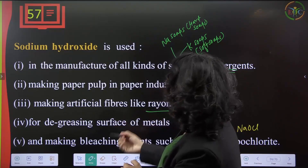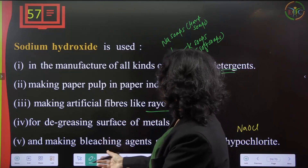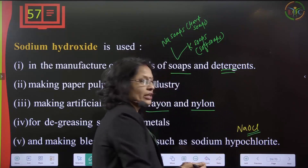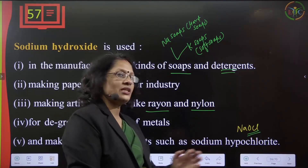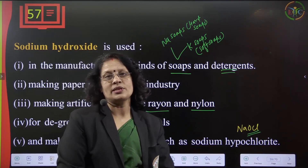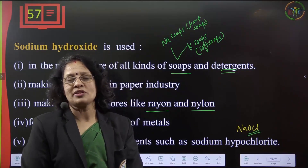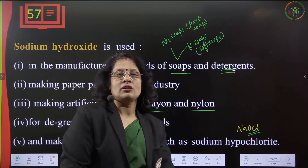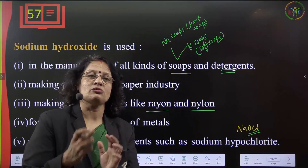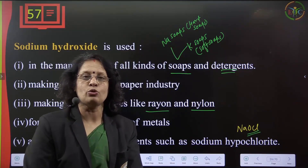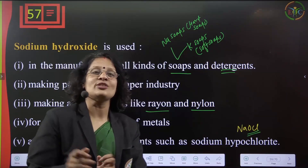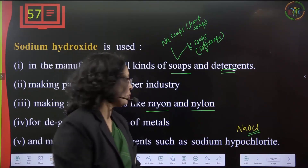Sodium hydroxide is used for degreasing metal surfaces and for making bleaching agents such as sodium hypochlorite. Sodium hypochlorite is an excellent bleaching agent, available in liquid and powder forms, used for stain removal and making surfaces sparkling white.